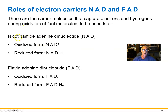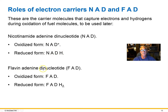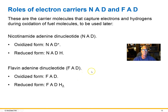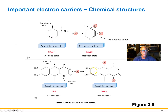Here are the two important electron carriers. NAD — nicotinamide adenine dinucleotide — is one carrier; NADH is the reduced form, which has received electrons and hydrogen. FAD — flavin adenine dinucleotide — is also a carrier, and its reduced form FADH2 is produced when it receives electrons and hydrogens. Remember that the electron transfer is the important change making these redox reactions.